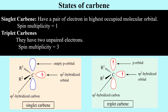On the basis of pairing of electrons there are two states of carbene. One is singlet carbene, having a pair of electrons in the highest occupied molecular orbital, with spin multiplicity of one. The second is triplet carbene, which has two unpaired electrons with the same spin and a spin multiplicity of three.